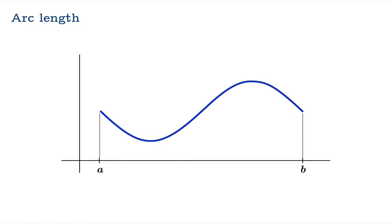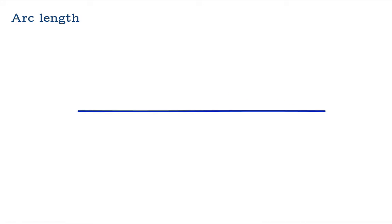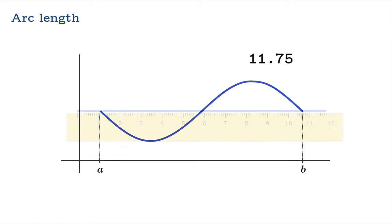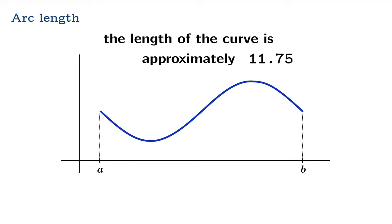The idea of arc length is quite simple. Suppose you take a nice smooth graph of a function over an interval, say from a to b, and you imagine that the graph is made of wire and you slowly straighten this wire out and then proceed to measure it. The resulting length we will call the arc length of the curve. So in this case, say the arc length is about 11.75 units.